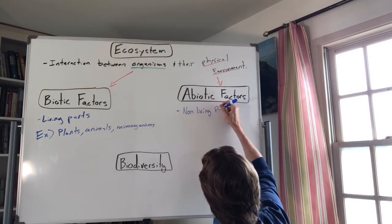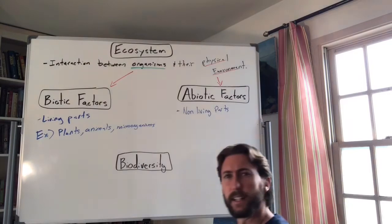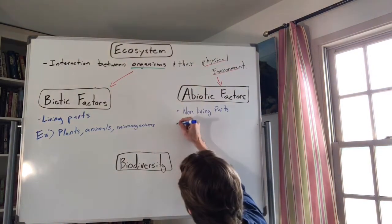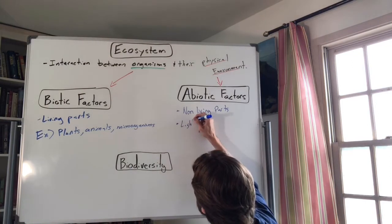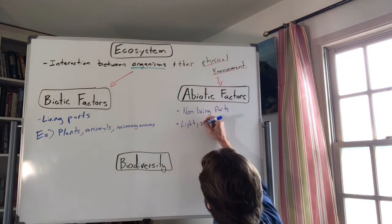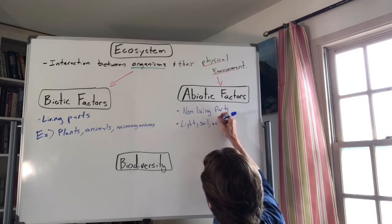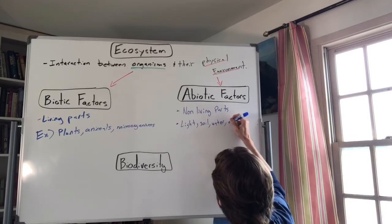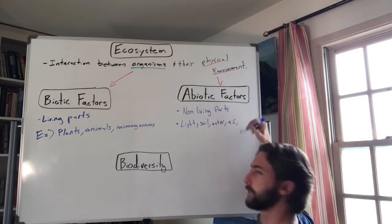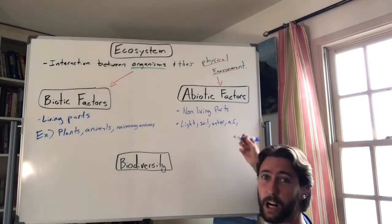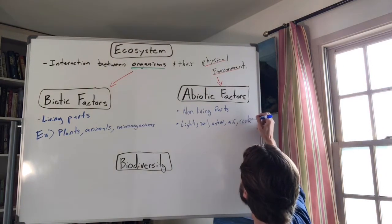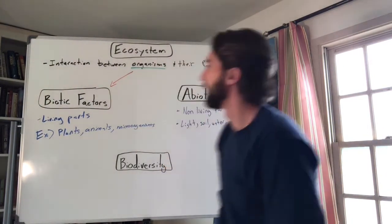The non-living things — the abiotic factors — are the non-living parts of an ecosystem. Can you think of any? Things like sunlight, soil, water, and the gases in the air. We'll be talking about carbon and molecules in another video. Could also be rocks — a lot of non-living things.